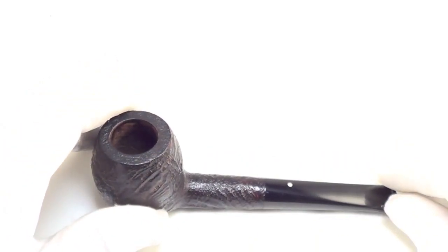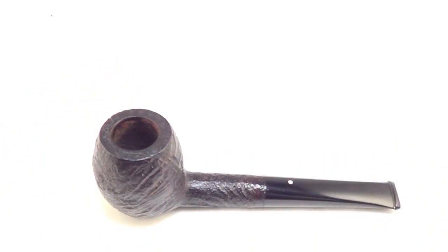The pipe is marked Dunhill Shell briar KFT made in England 0-4-S. So again, this is from 1970.